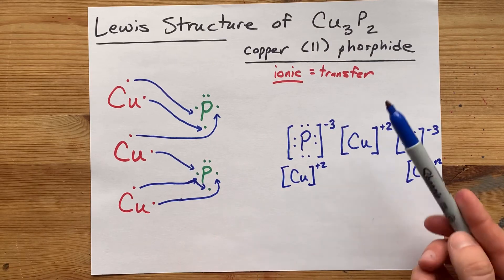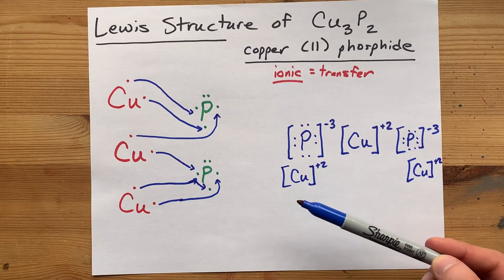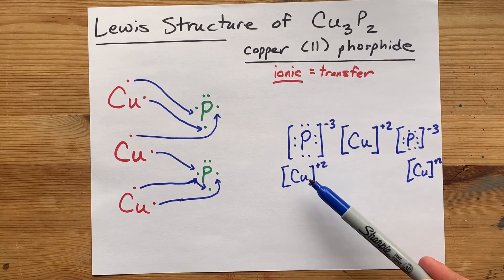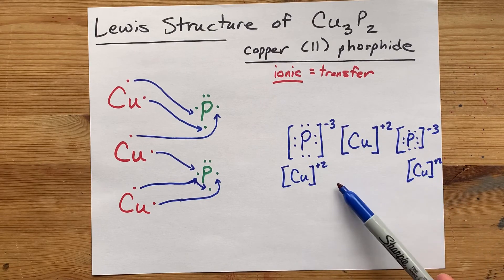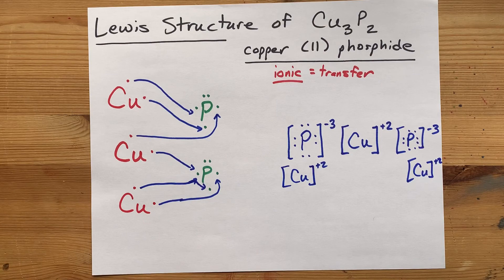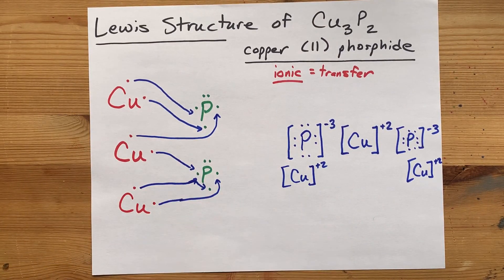It shows three copper atoms having given away their electrons to two phosphoruses. Done. Complete Lewis structure here, transfer of electrons shown here. Congratulations, you are done. Best of luck.